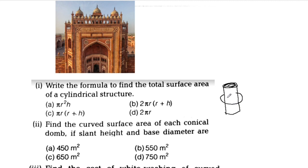The total surface area consists of the curved surface area plus the top and bottom areas. The curved surface area is 2πr, and adding the base areas gives the total surface area formula: 2πr(r + h). Option B is correct.